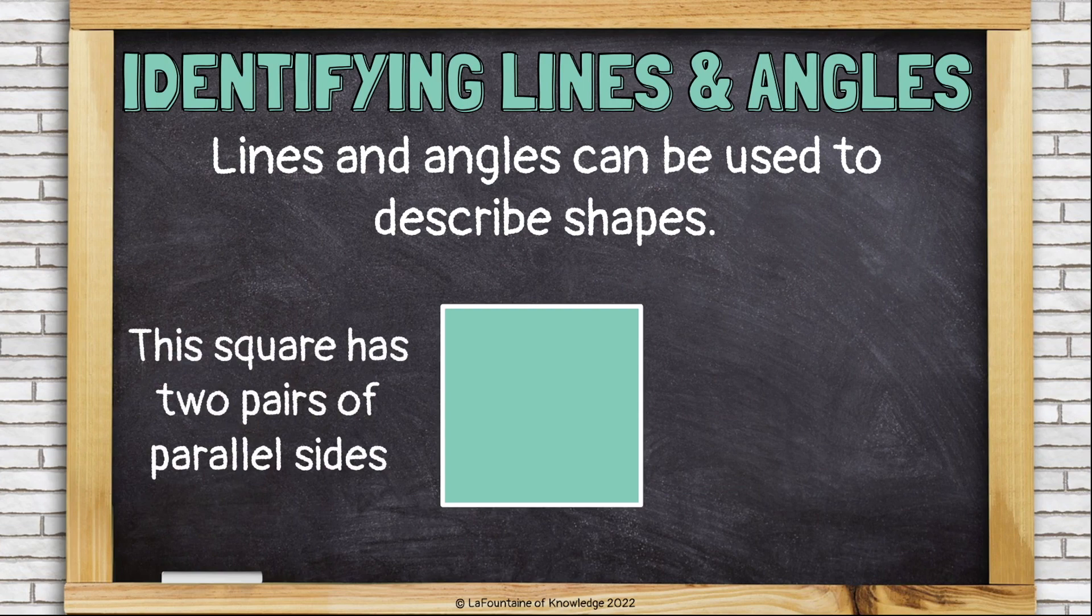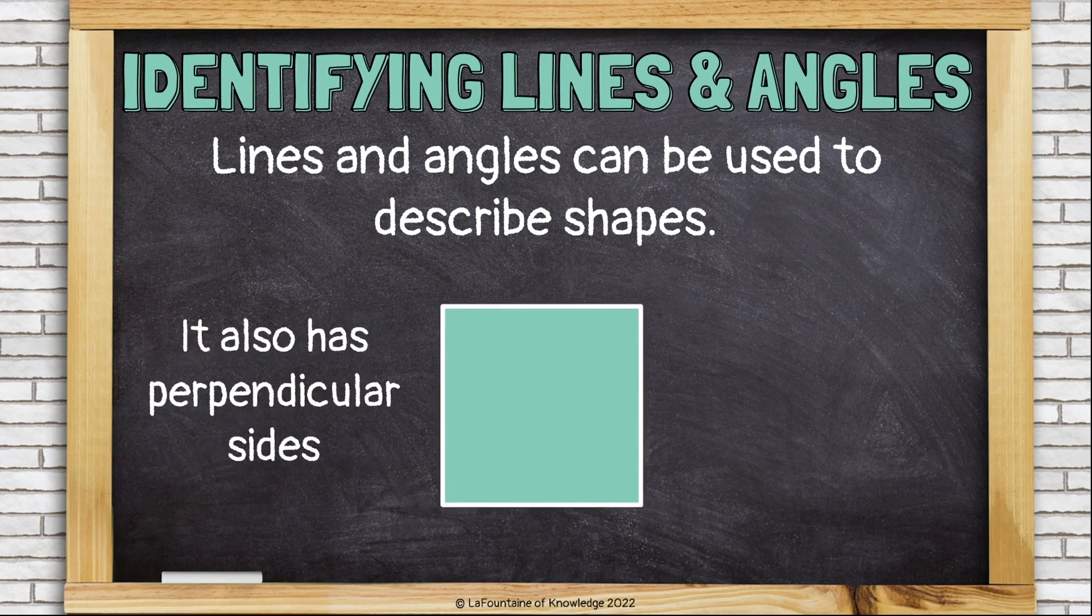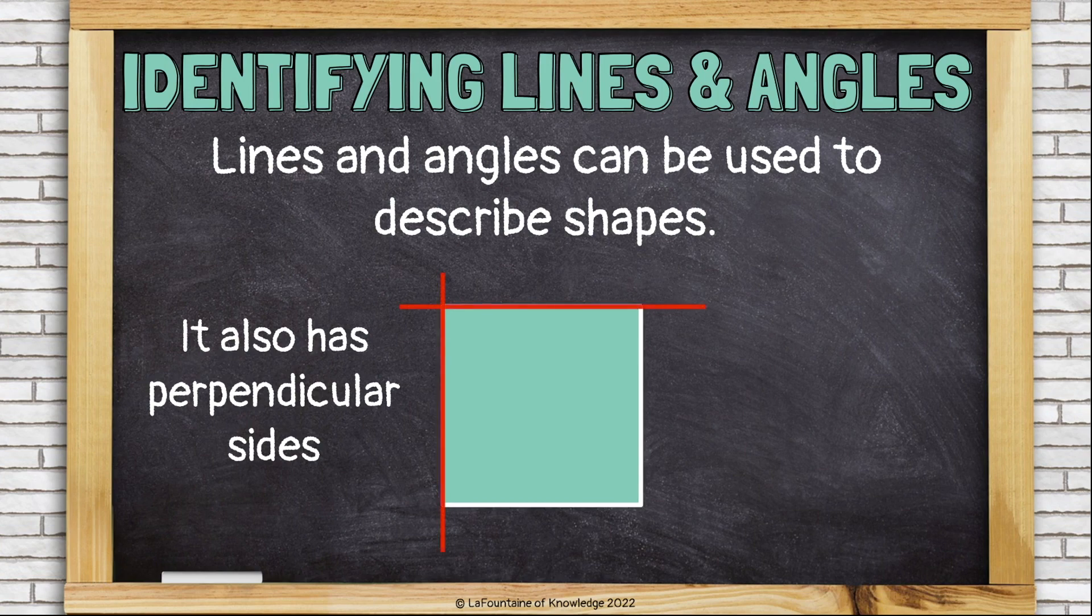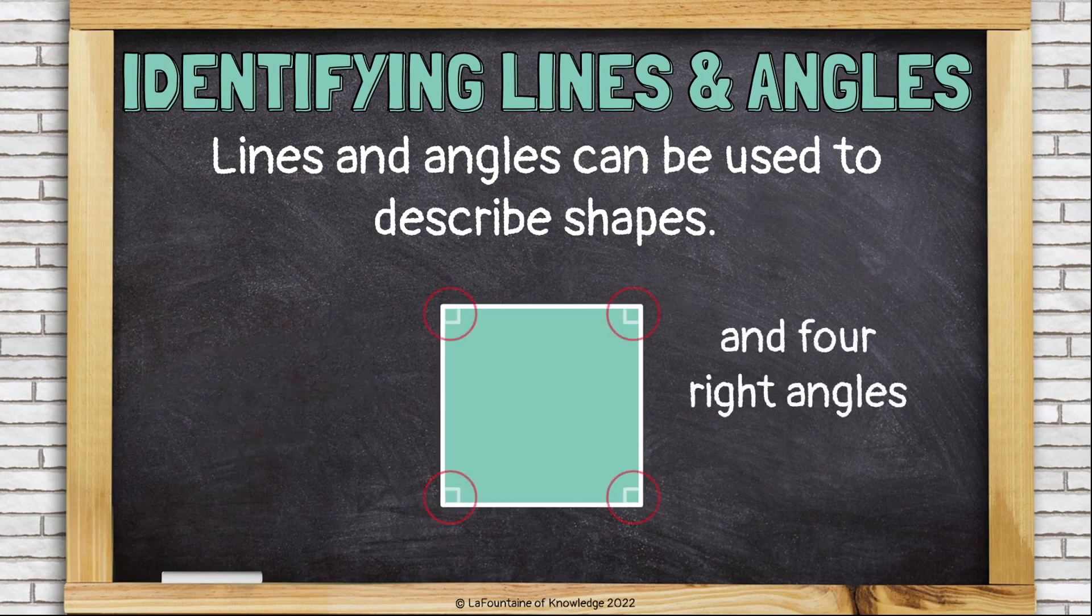This square has two pairs of parallel sides. It also has perpendicular sides and four right angles.